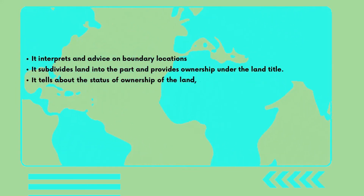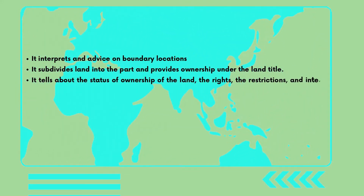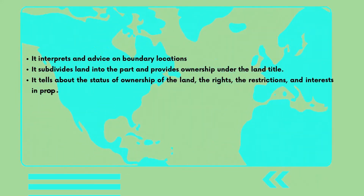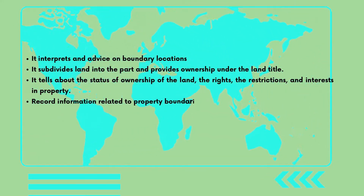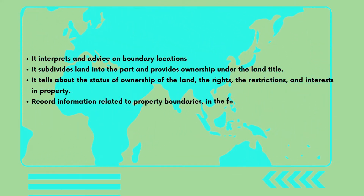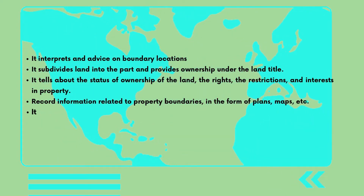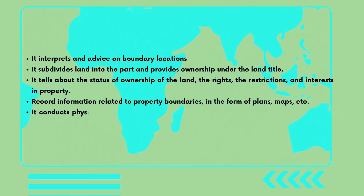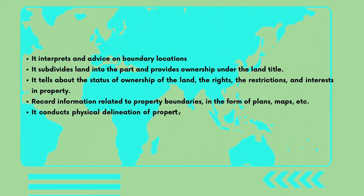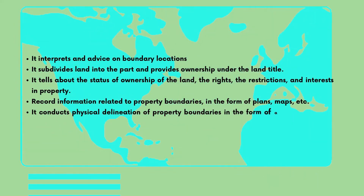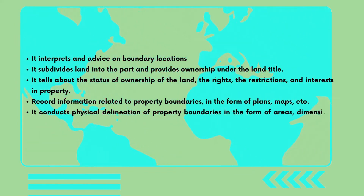It tells about the status of ownership of the land, the rights and restrictions, and interests in the property. It records information related to property boundaries in the form of plans, maps, etc. It also conducts physical delineation of property boundaries in the form of areas, dimensions, and the rights associated with the property.